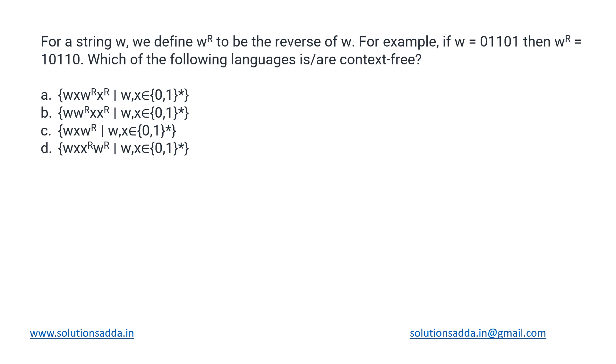We have been given a string w, and we define w^r to be the reverse of w. For example, if w is 01101, then its reverse would be 10110. Now from the given options, we need to identify which of the given languages is or are context-free. This is an MSQ type of question.